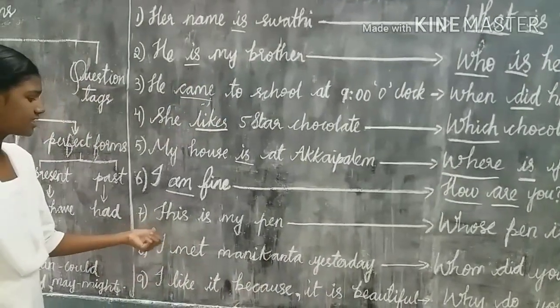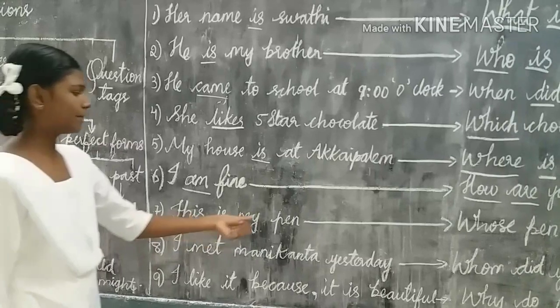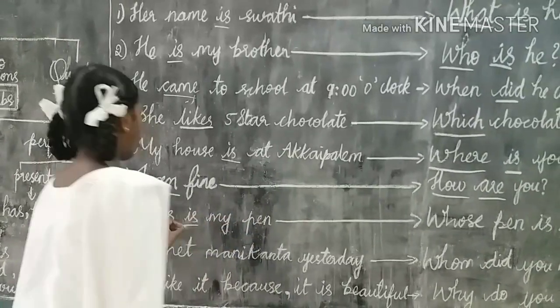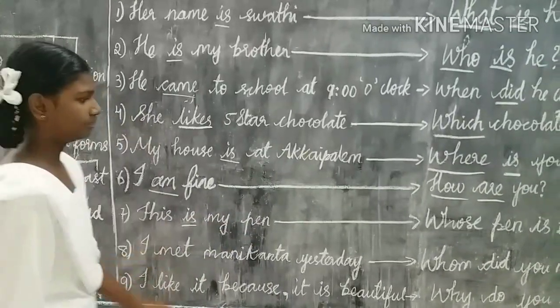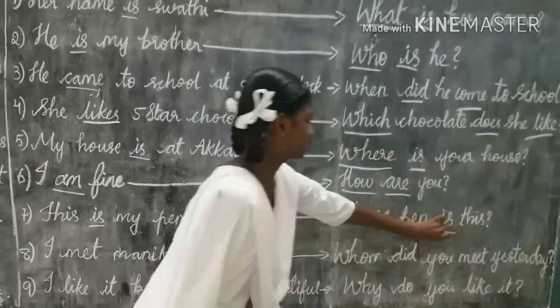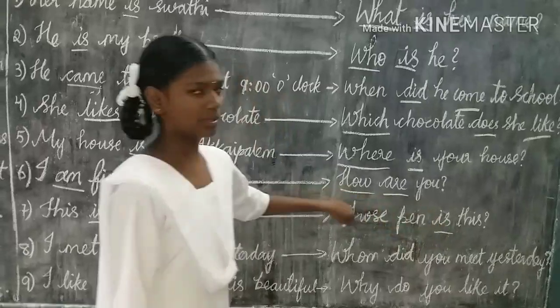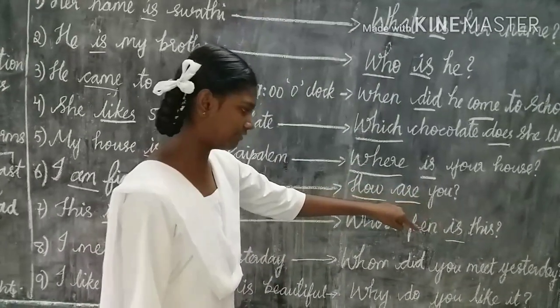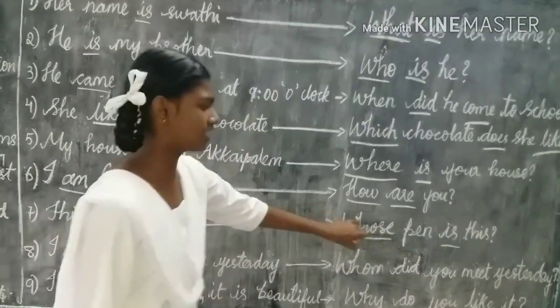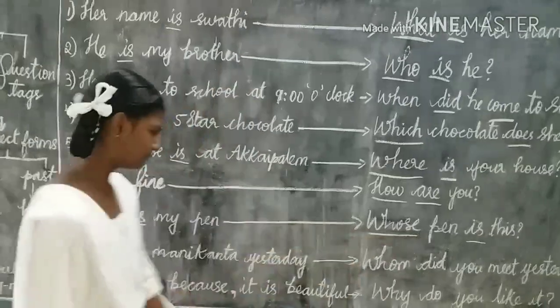The seventh example is: this is my friend. Here 'is' is an auxiliary verb. This is a possessive question, and we use the WH question word 'whose.'